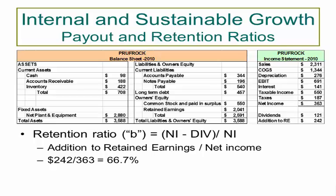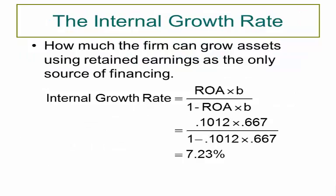Now that we know the difference between the retention ratio and dividend payout ratio, let's look specifically at the internal growth rate. The internal growth rate is how much the firm can grow assets using retained earnings as the only source of finance—how fast can we grow the company using only our own sources of income. The formula is ROA times B over 1 minus ROA times B. Figure out ROA times B in the numerator, then plug that same number in the denominator as well. In this case, you get 7.23%—this company can grow a little over 7% on its own.